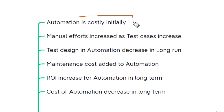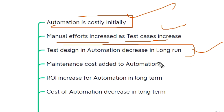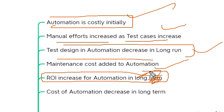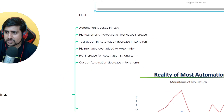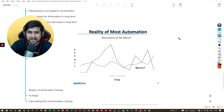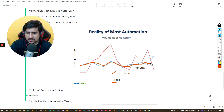A couple of important points: automation is costly initially — this is true. Manual efforts increase as test cases increase sprint by sprint. Test designing in automation generally takes time, but execution takes very little time. Maintenance cost is also added in automation. ROI of automation is generally seen in the long term, and cost of automation decreases over the long term. Now for a reality check — this diagram from SmartBear reflects what I've actually seen.